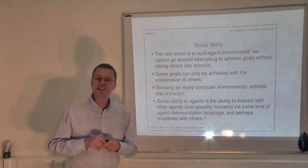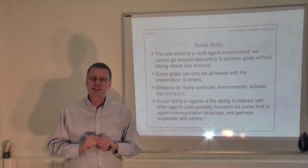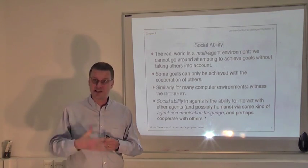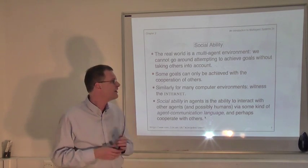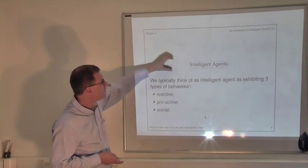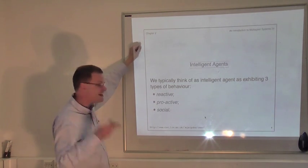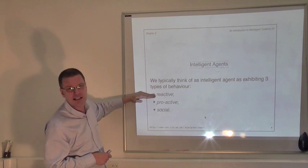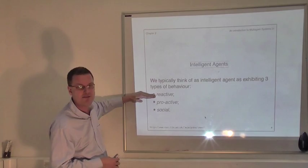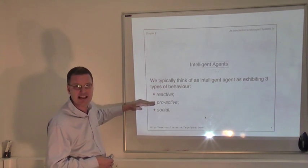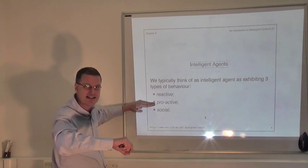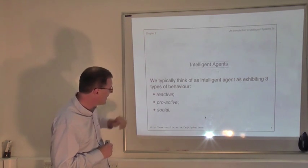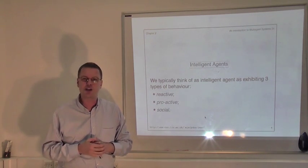Social ability is particularly important when the delegated goals that our agents have are in some sense in conflict with one another — they're different goals — and in that situation you need the ability to negotiate and reach agreement on a disputed matter. So the three key behaviours for what we call an intelligent agent are: reactive — capable of realising when the environment has changed and modifying your behaviour accordingly; proactive — capable of exhibiting goal-directed behaviour, being given a delegated goal and systematically working to achieve it, getting a good balance between reactive and proactive; and finally social ability — the ability to cooperate, coordinate, and negotiate with other software agents.